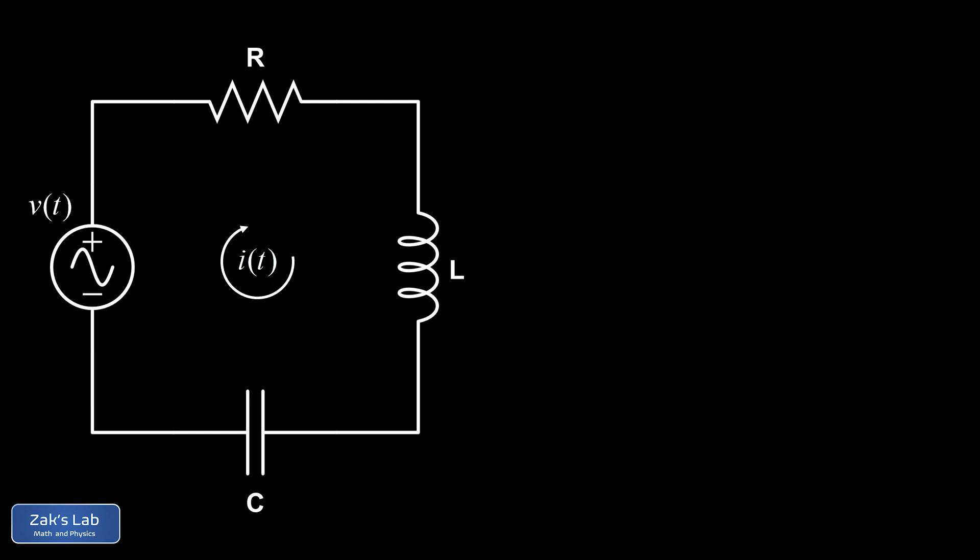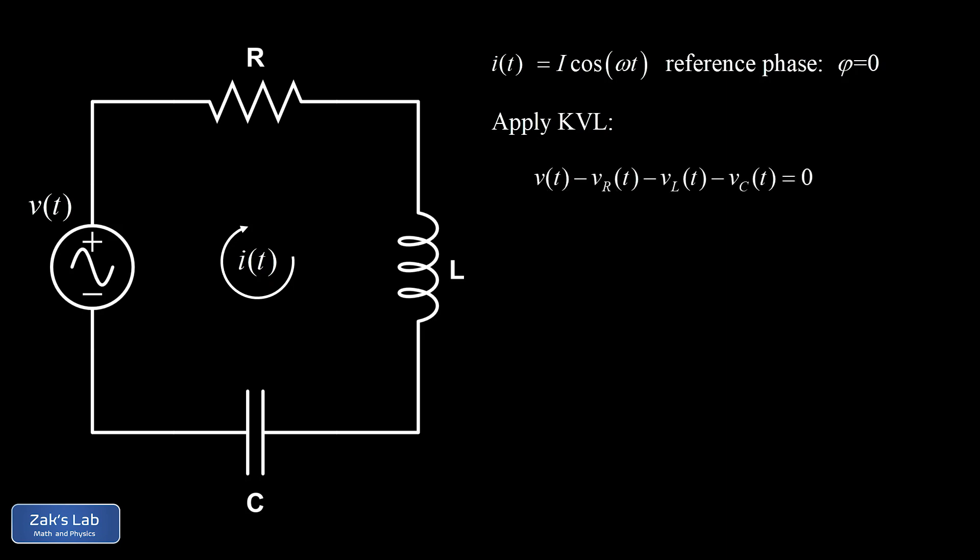Then we'll write down the voltage as a function of time in a way that reveals its phase shift with respect to the current. We start with the sinusoidal current function i(t) = I·cos(ωt), which is our standard reference phase — the current has a phase angle of φ = 0. We then apply KVL, Kirchhoff's voltage law, traversing a closed loop and tracking all voltage changes.